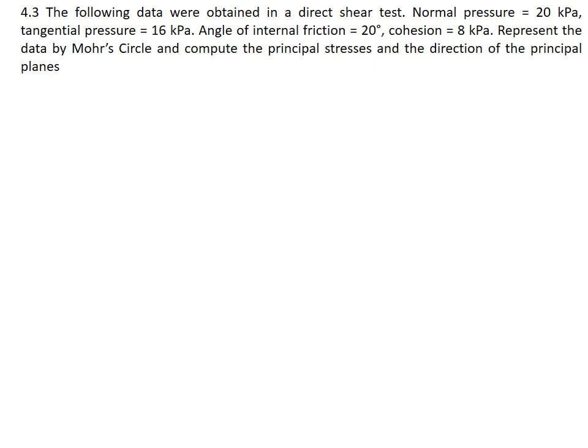To make things more clear we will write down the given data. We have sigma 20 kPa, tau 16 kPa, C 8 and phi 20 degrees. We need to find out the sigma 1 and sigma 3 and their angles.